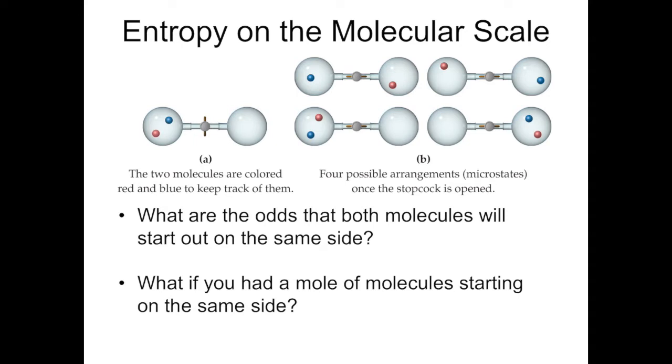And if you look at example B on the screen, you can see that the molecules can take any one of four possible arrangements. These are called microstates, and we'll look at those a little bit later.